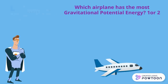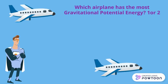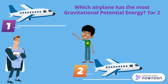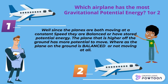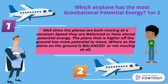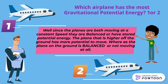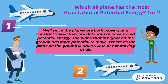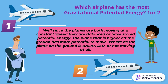Which airplane has the most gravitational potential energy — plane 1 or plane 2? Both planes are moving at a constant speed, so they are considered to be balanced, or have stored potential energy. Plane number 1 has the most gravitational potential energy because it's higher off the ground.